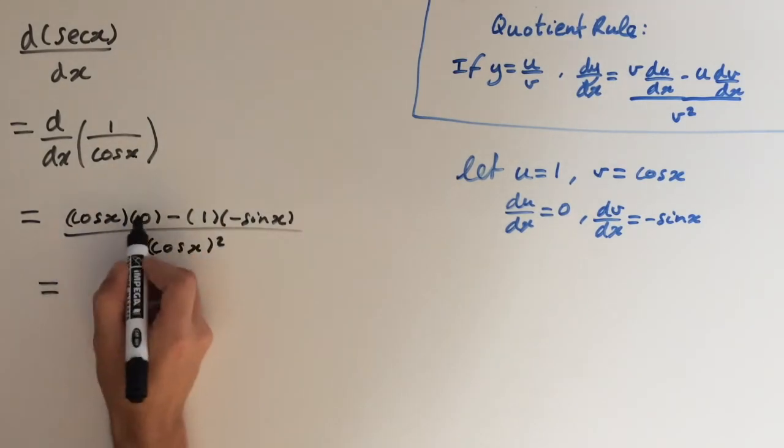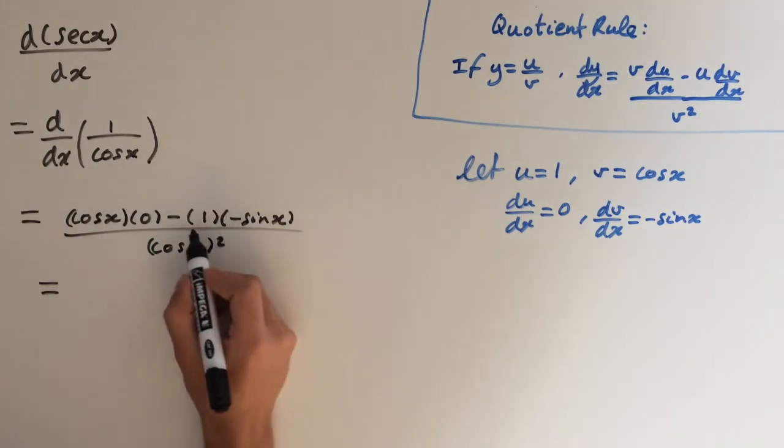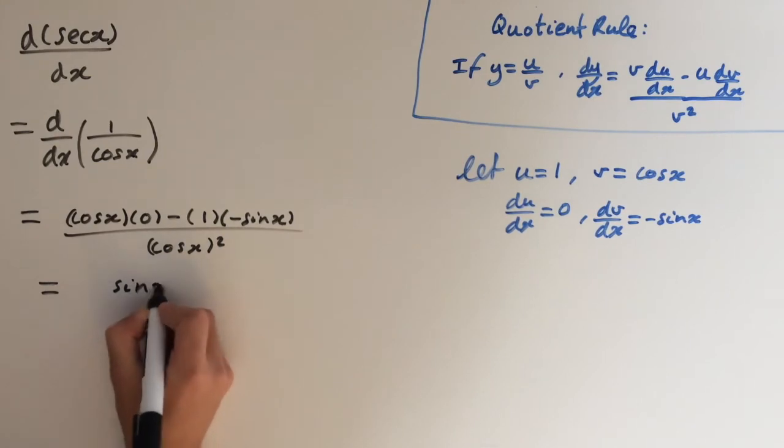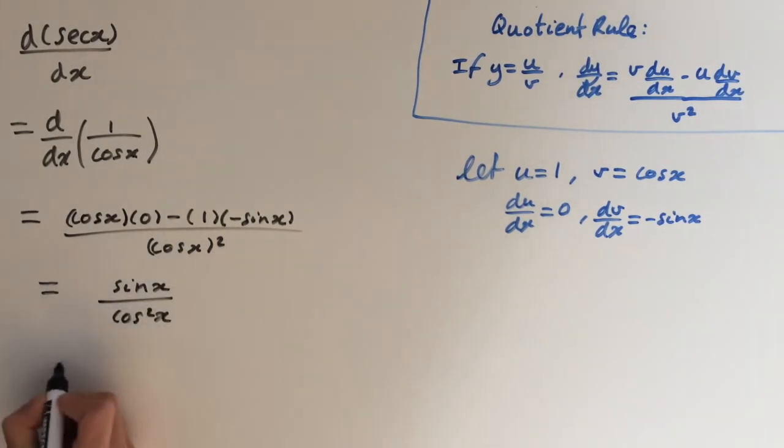So this is obviously going to come to 0, so it will cancel out. And here we have minus 1 times minus sine, so we get plus sine on the top and cosine squared on the bottom. So we can express this as